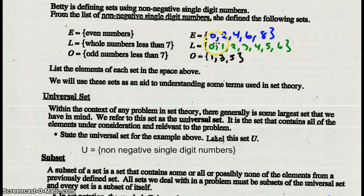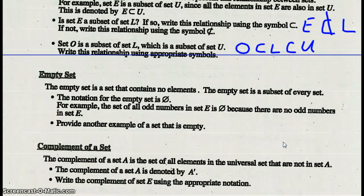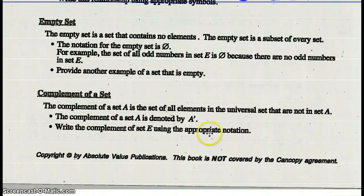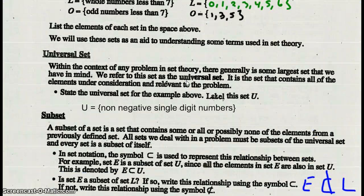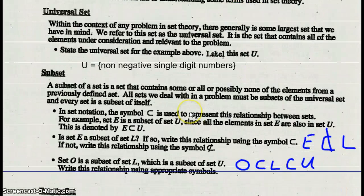Set E is even numbers 0, 2, 4, 6, 8. No odd numbers. Provide another example of a set that is empty. We could say the set of even numbers in set O. You look at set O, there are no even numbers in set O. That's an empty set.